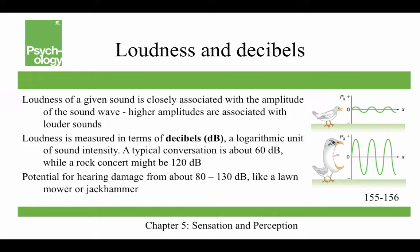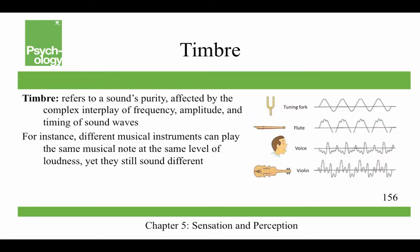The loudness of a given sound is closely associated with the amplitude of the sound wave — higher amplitudes are associated with louder sounds. Loudness is measured in decibels, a logarithmic unit of sound intensity. A typical conversation is about 60 decibels and a rock concert might be 120 decibels. The potential for hearing damage is between 80 to 130 decibels, like a lawnmower or jackhammer, and the threshold for pain is about 130 decibels — like a jet taking off or a revolver firing at close range. Timbre refers to a sound's purity, affected by the complex interplay of frequency, amplitude, and timing of sound waves — different musical instruments can play the same note at the same loudness yet sound different.